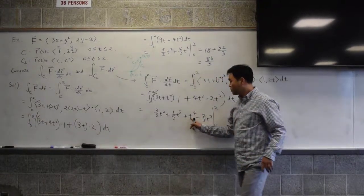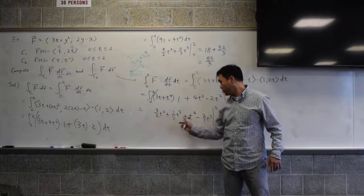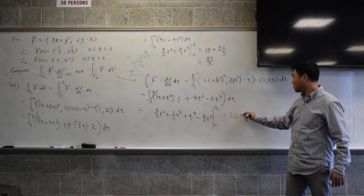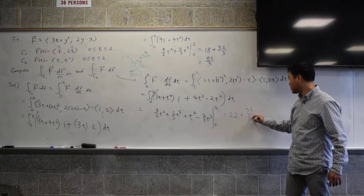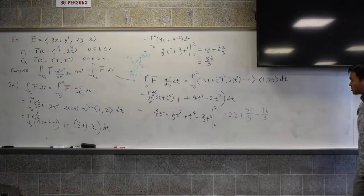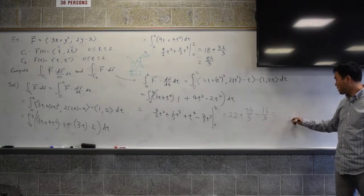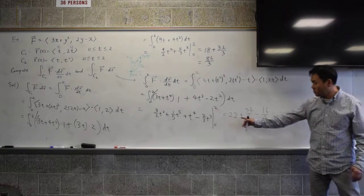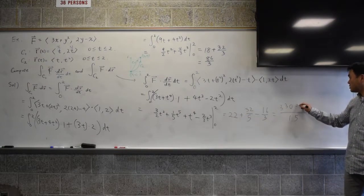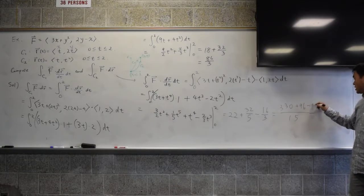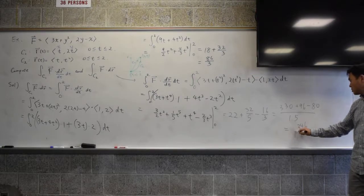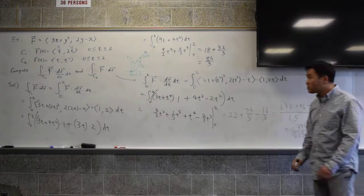And then you're integrating this by t. 3t integrates to 3/2 t², t⁴ is 1/5 t⁵, plus t⁴ minus 2/3 t³. And you have to plug in 2 and 0. That's 16, 6, 22. 2 plugged in is, here it's 32/5, 8 times 2 minus 16/3. If I put everything over 15, that's 330 plus 96 minus 80. So 16 added to this, that's 346/15. So that's the integral.